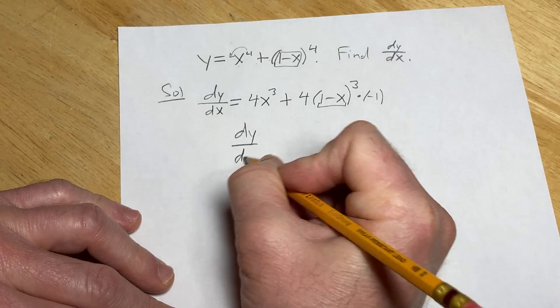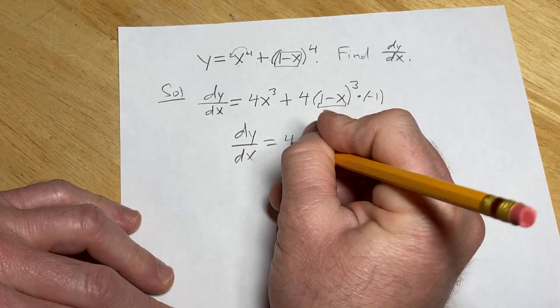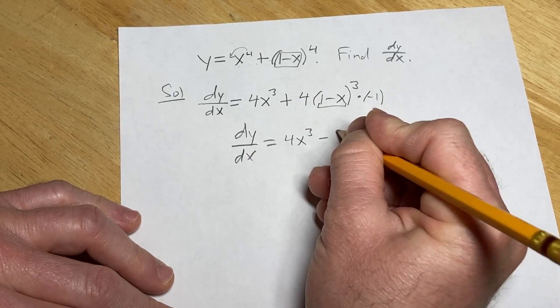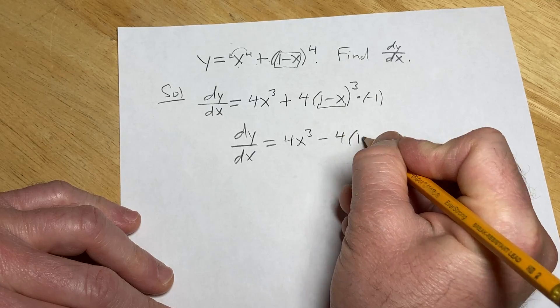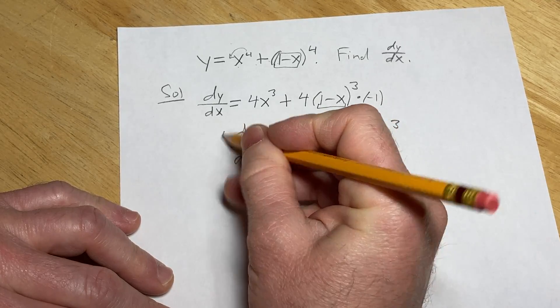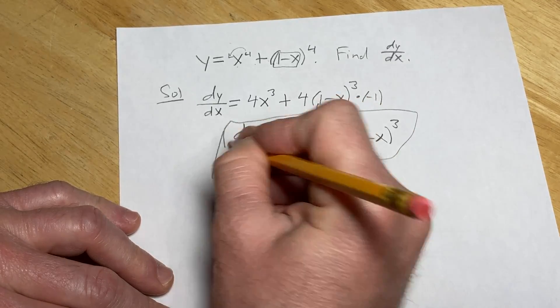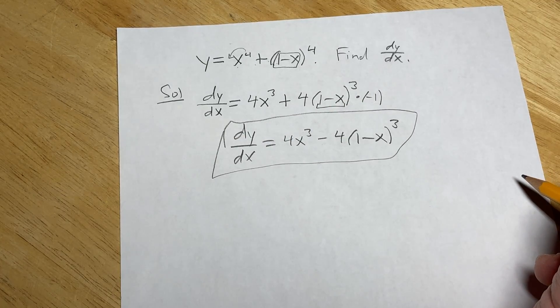So we have dy dx equals 4x cubed minus 4, parentheses, 1 minus x to the third power. And that would be dy dx. I hope this video has been helpful. Take care.